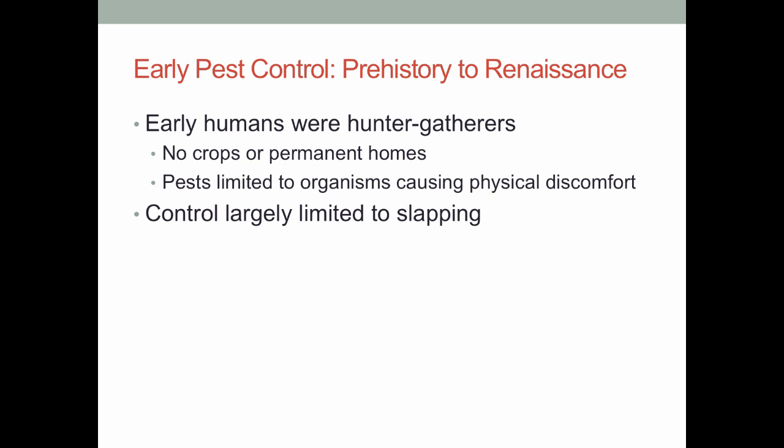If we go all the way back to the emergence of humans, humans started out as hunter-gatherers, and they didn't really have a lot of areas for pests to be nuisances. There weren't permanent homes or crops because agriculture hadn't been invented yet. So most pests were limited to things that caused physical discomfort or transmitted diseases, and control at this point was largely physical — slapping, maybe sitting a little closer to a smoky fire — relatively limited control.